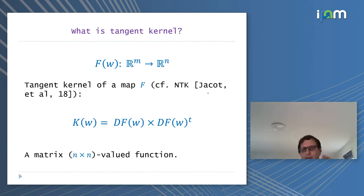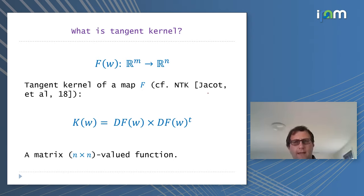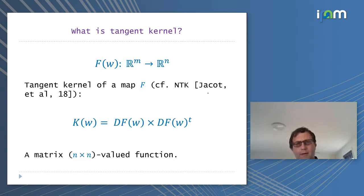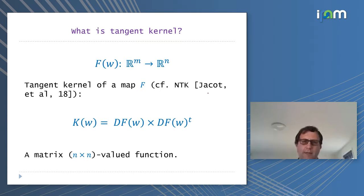What is a tangent kernel? Following the terminology from the neural tangent kernel paper, if you have a map F(W) from R^M to R^N, the derivative of this map — the differential — can be represented as an M×N matrix at each point. If you take this matrix and multiply it by its transpose, you get an N×N matrix — that's the tangent kernel. It's simply derivative times derivative transpose.